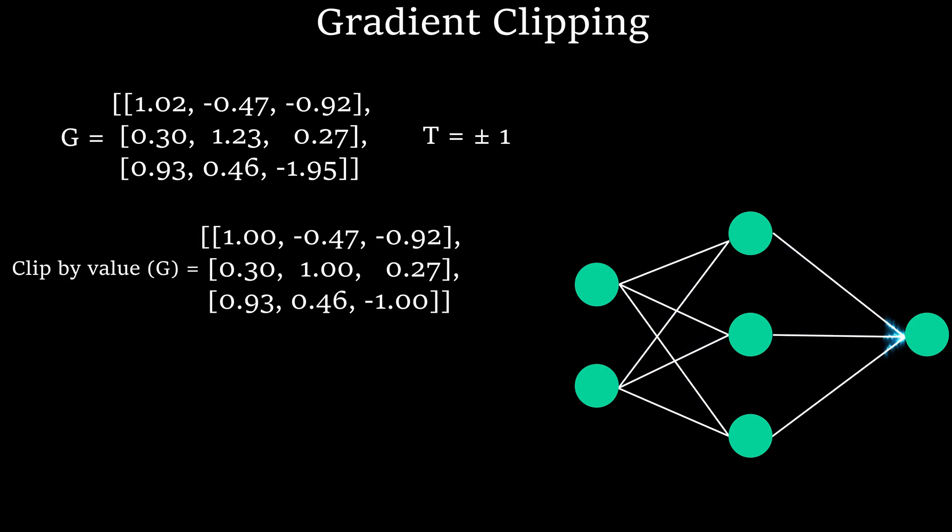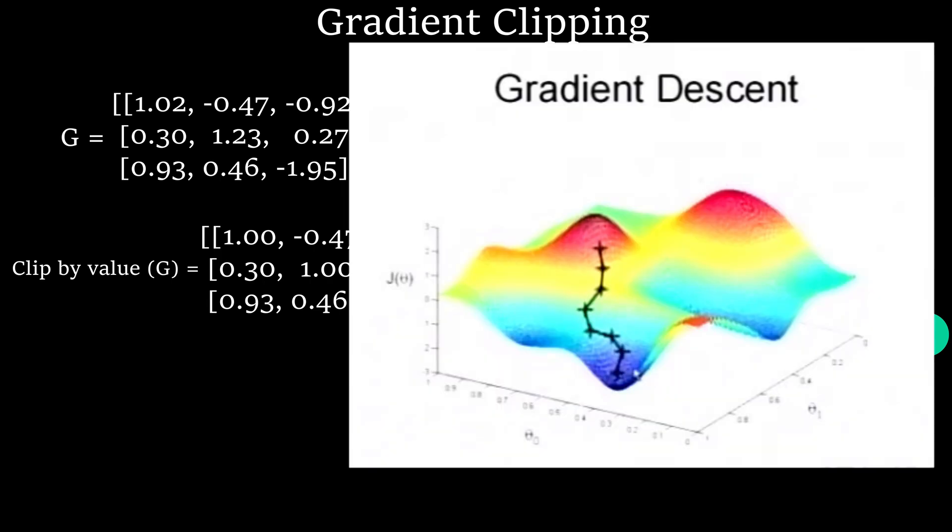This method is called ClipByValue where anytime any value in the error derivative greater than or less than threshold, simply clip the value. But here's a problem. Changing few values in gradient leads to change and the gradient starts to point in completely different direction.